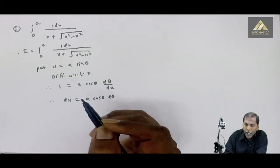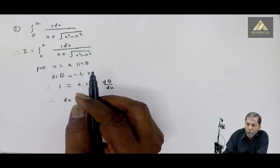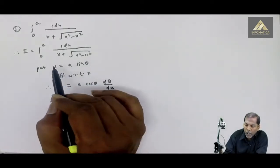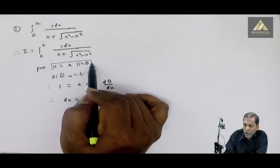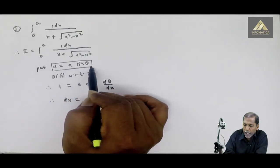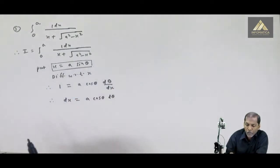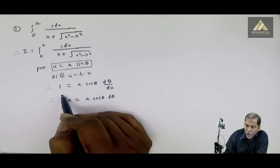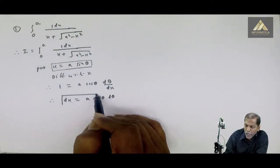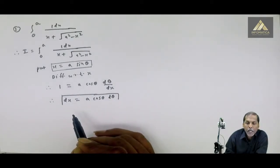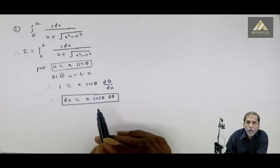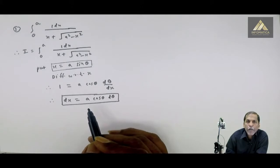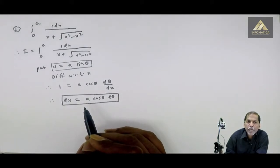dx is dividing here, so shifting to the left hand side, we get 1 times dx, giving us dx equal to a cos theta d theta. So the two important substitutions are: where x appears, write a sin theta, and replace dx with a cos theta d theta. We also need to change the limits.